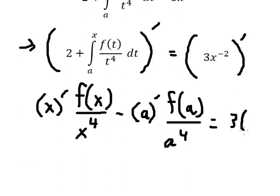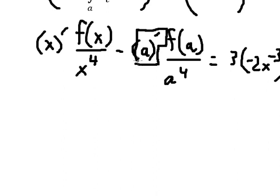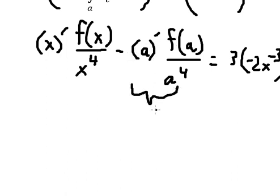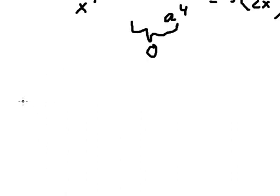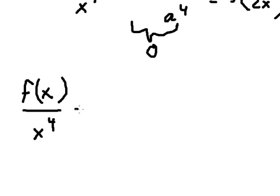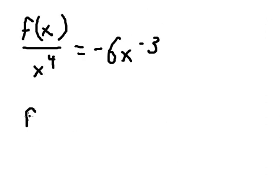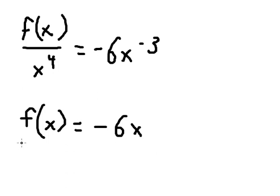We have negative 6 times x to the power of negative 3. We know that the constant gives us zero when we take the first derivative of a. So we have zero here, and this one equals 1. Now we can write: negative 6s to the power of negative 3. Then we multiply both sides by s to the power of 4.